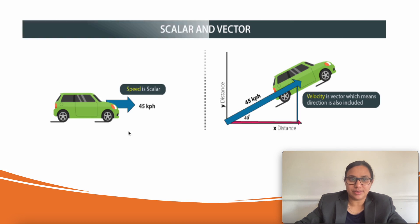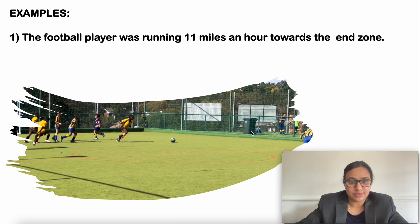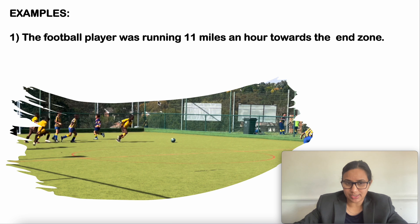Another example: a car moving at 45 kilometers per hour — speed is a scalar. But if it has a direction, such as at 40 degrees to the horizontal, then direction is included, making it a vector. Let us go through some examples. First example: 'The football player was running 11 miles an hour towards the end zone.' Is it scalar or vector? It is a vector quantity, because the direction 'towards the end zone' is specified and 11 miles per hour indicates the magnitude.